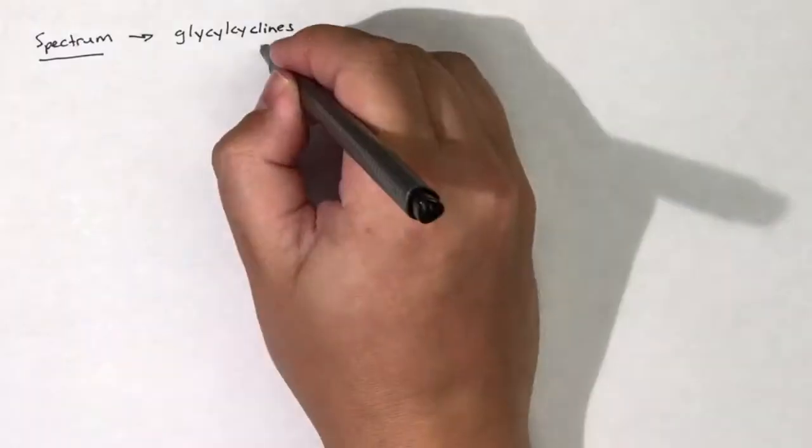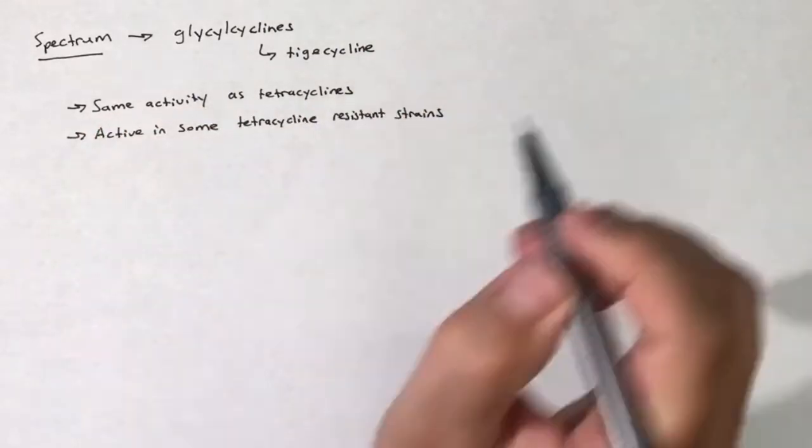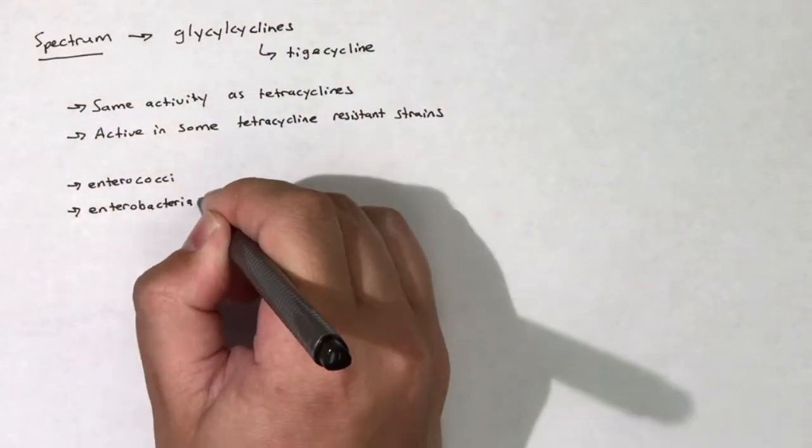Glycylcyclines, and mainly tigecycline, have the same activity as tetracyclines with some added activity against those bacteria that have developed resistance to tetracyclines.